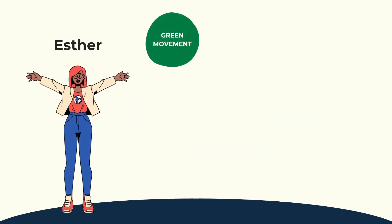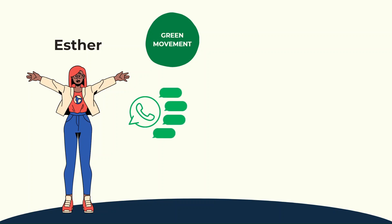Meet Esther, an environmental activist from the Green Movement, a group dedicated to accelerating action on the climate crisis. As the movement grows, Esther finds it challenging to keep up with organizing and engaging new members effectively. Until now, they relied on a WhatsApp group, but the flood of messages and notifications makes it hard for members to stay informed. On top of that, they need a more secure platform for protest organizing.